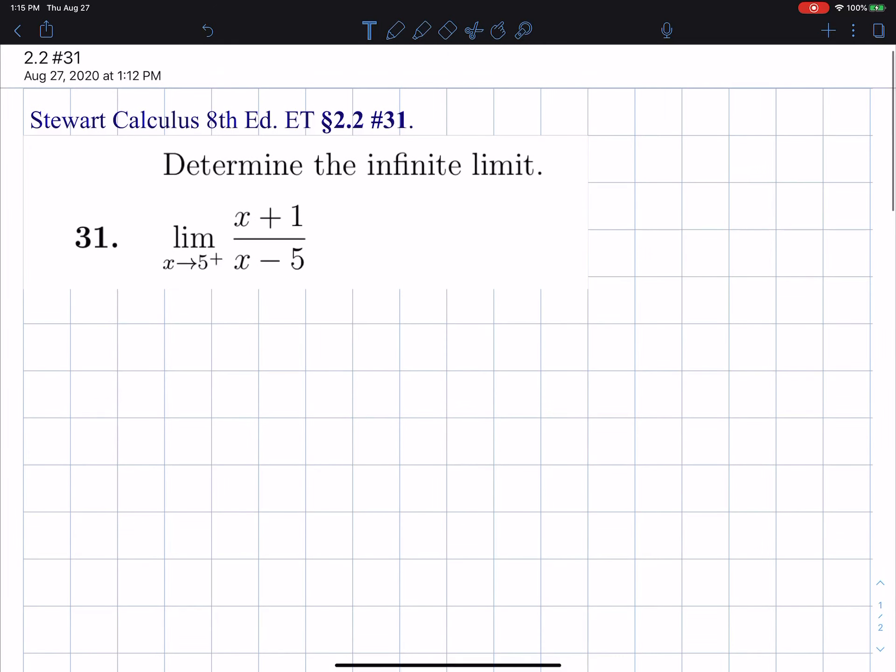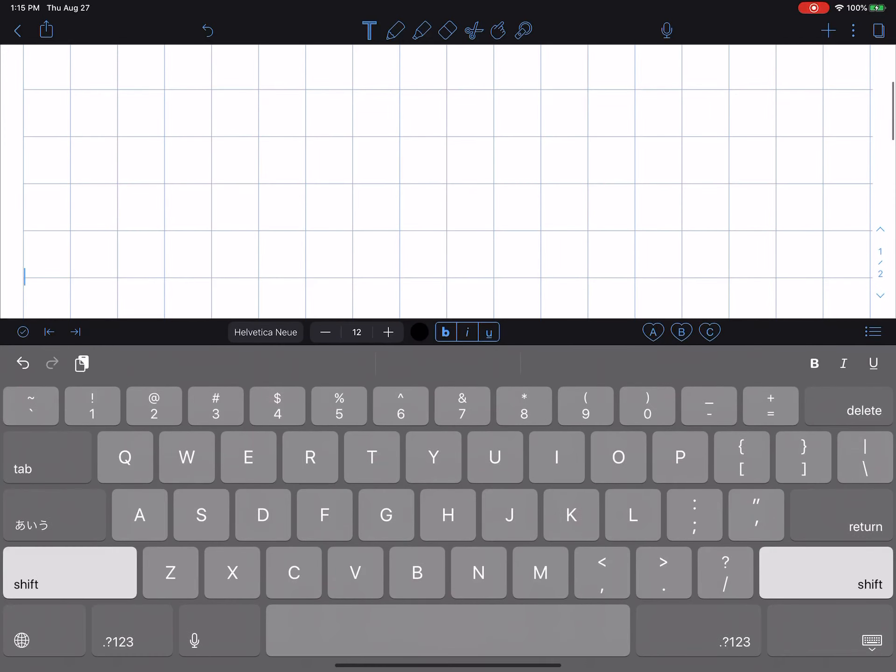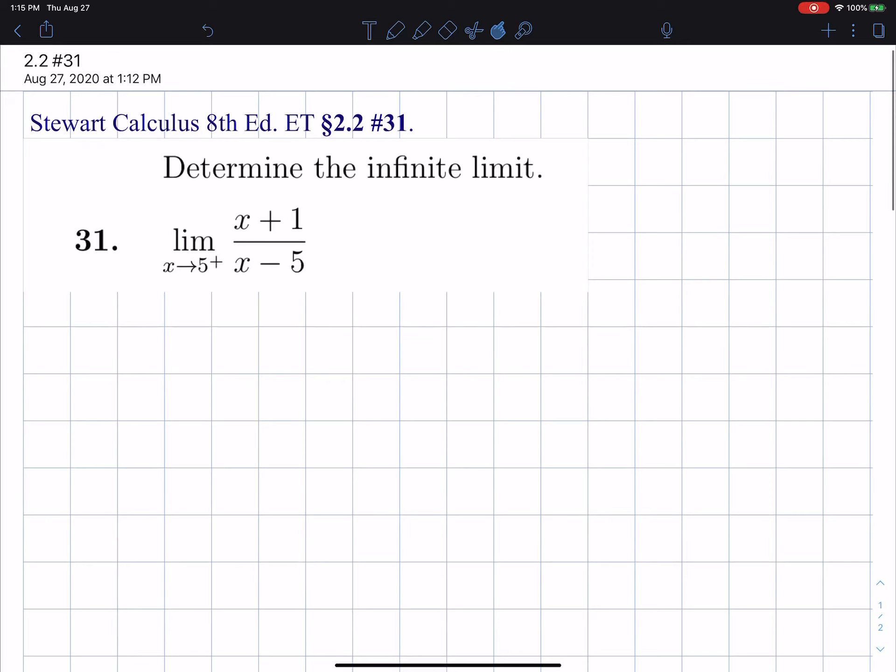Here we're trying to find an infinite limit, and let's see what we have here. We have the limit as x approaches 5 from the right of x plus 1 divided by x minus 5.